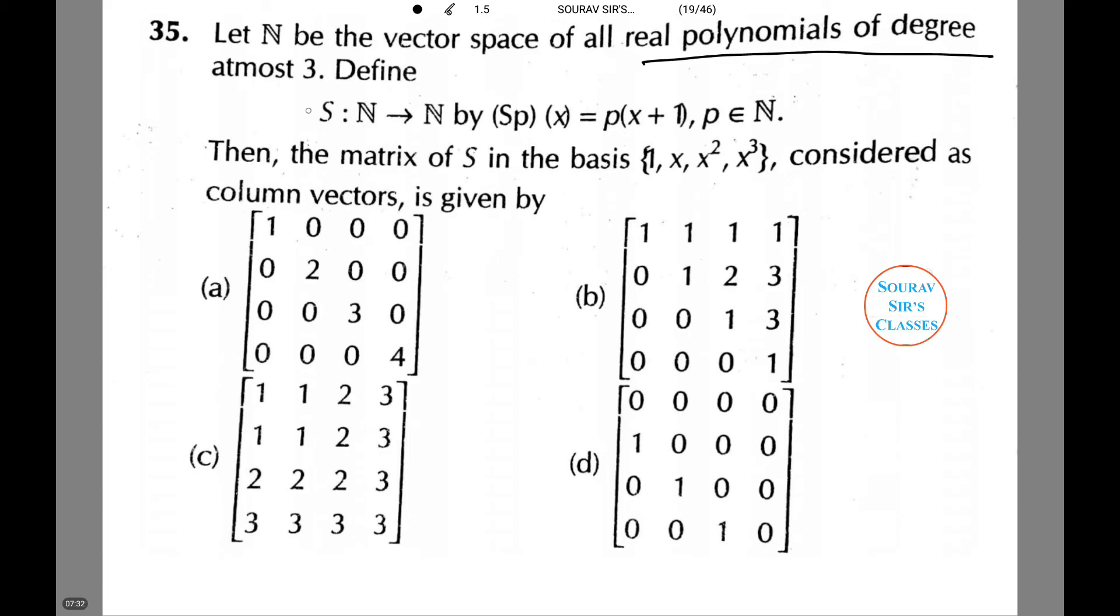The next question: Let N be the vector space of all real polynomials of degree at most three. Now we define S: N → N by S(p)(x) = p(x+1), where p belongs to N. Then the matrix of S in the basis (1, x, x², x³) can be considered as column vectors.